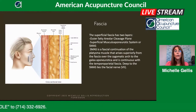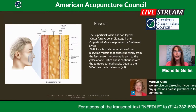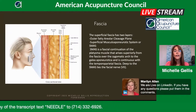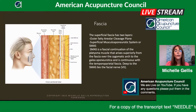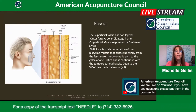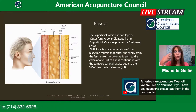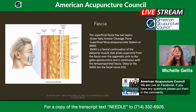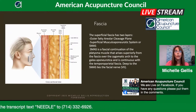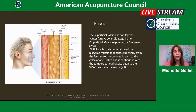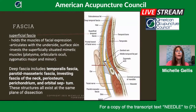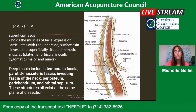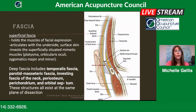The superficial fascia itself has two layers: an outer fatty layer and an inner layer. That inner layer is what allows us to make facial expressions — it takes nerve impulses from deep and sends them out to the muscle, which then translates out to our skin. So the superficial fascia layer is what is responsible for our facial expressions.